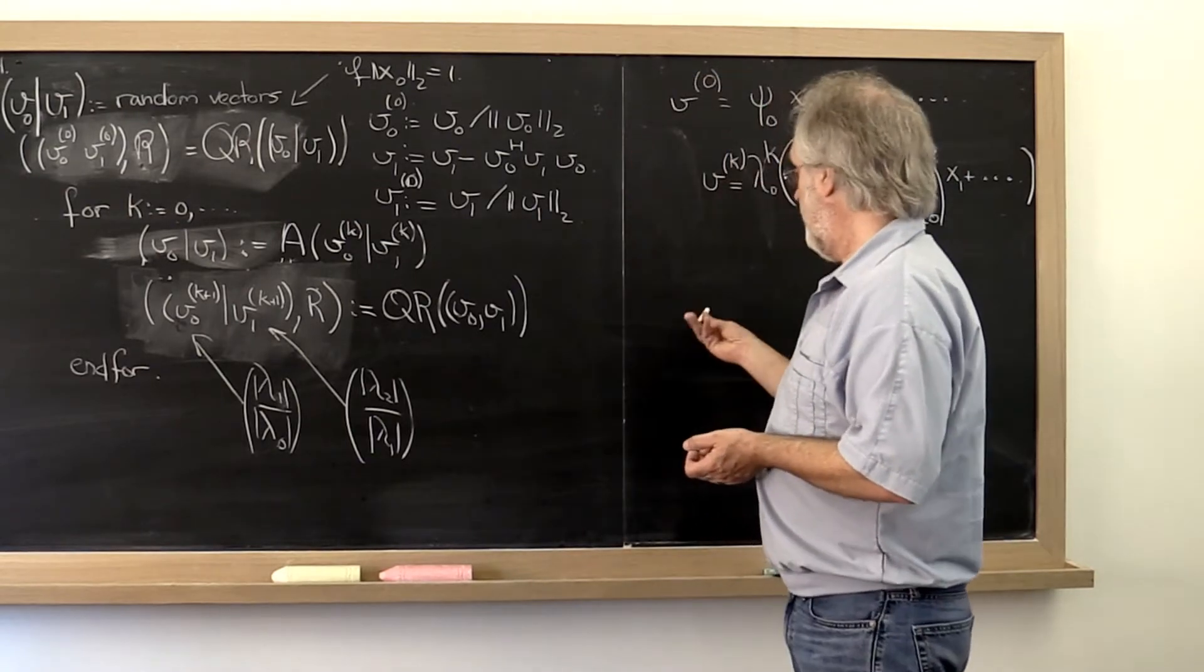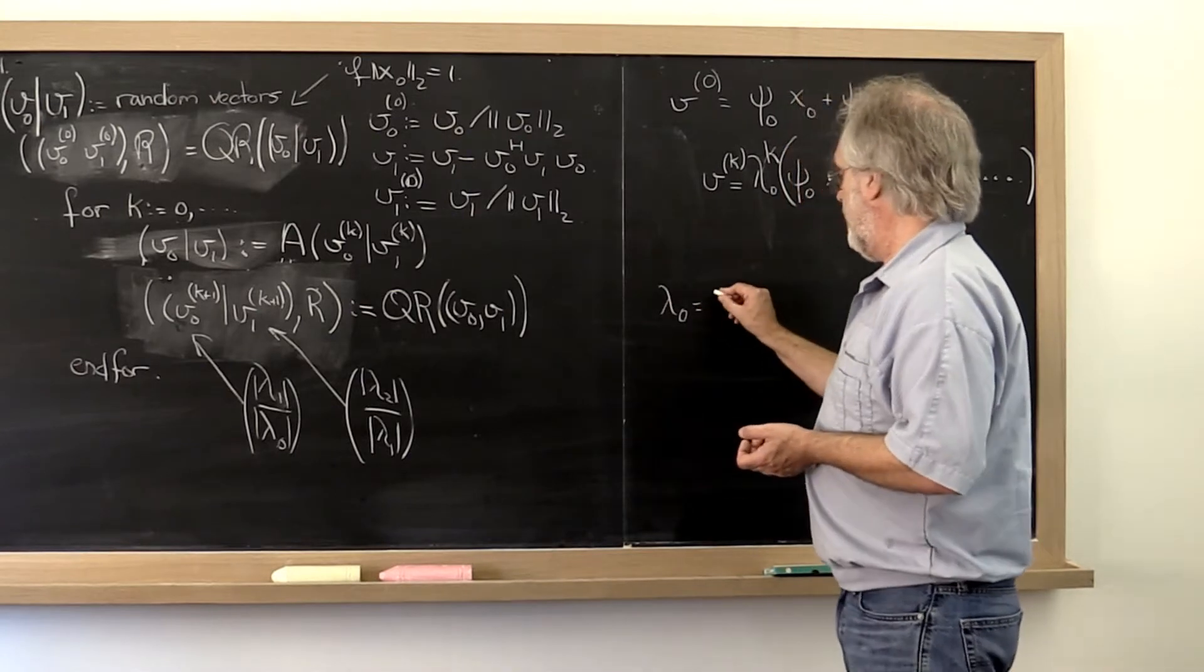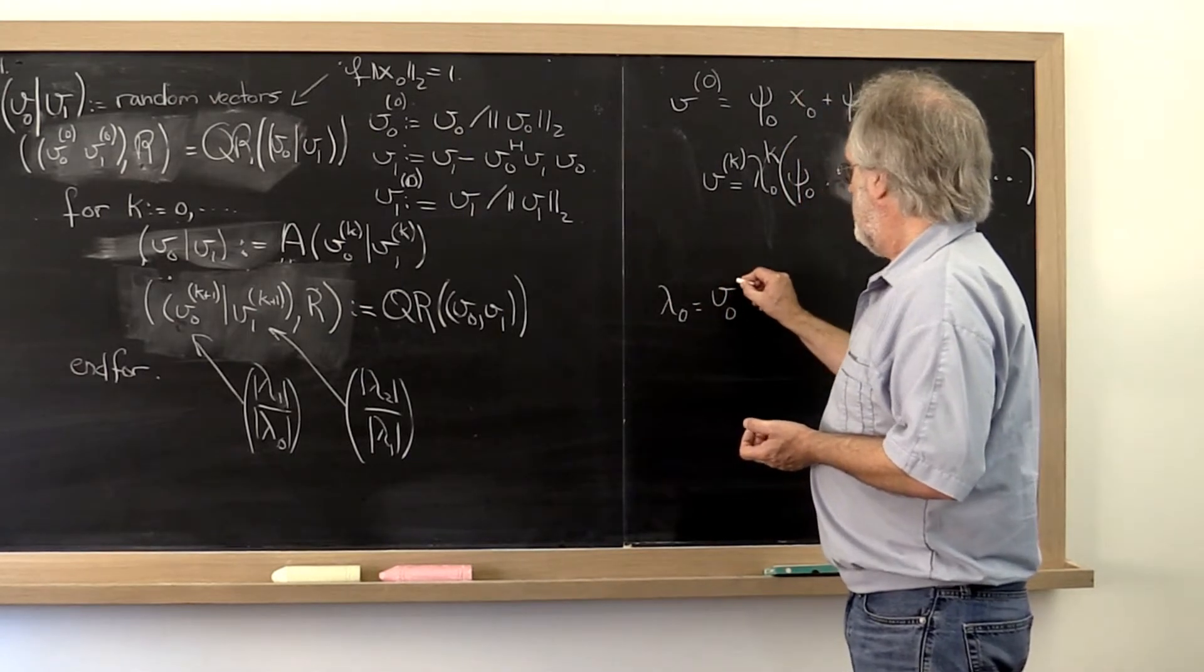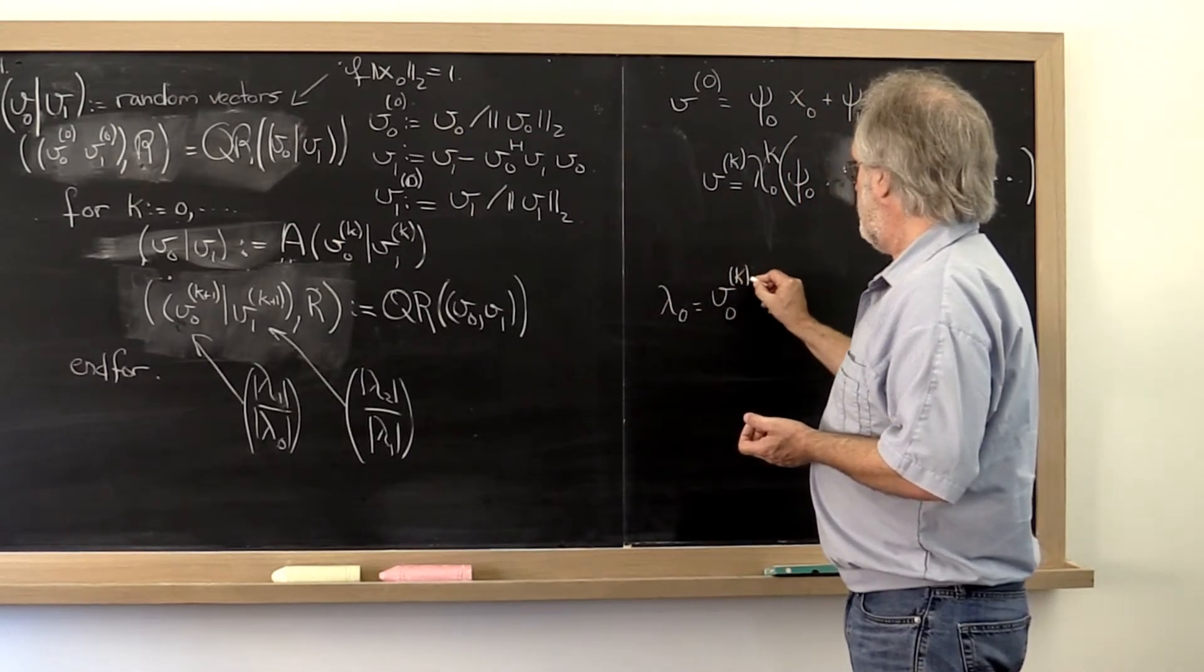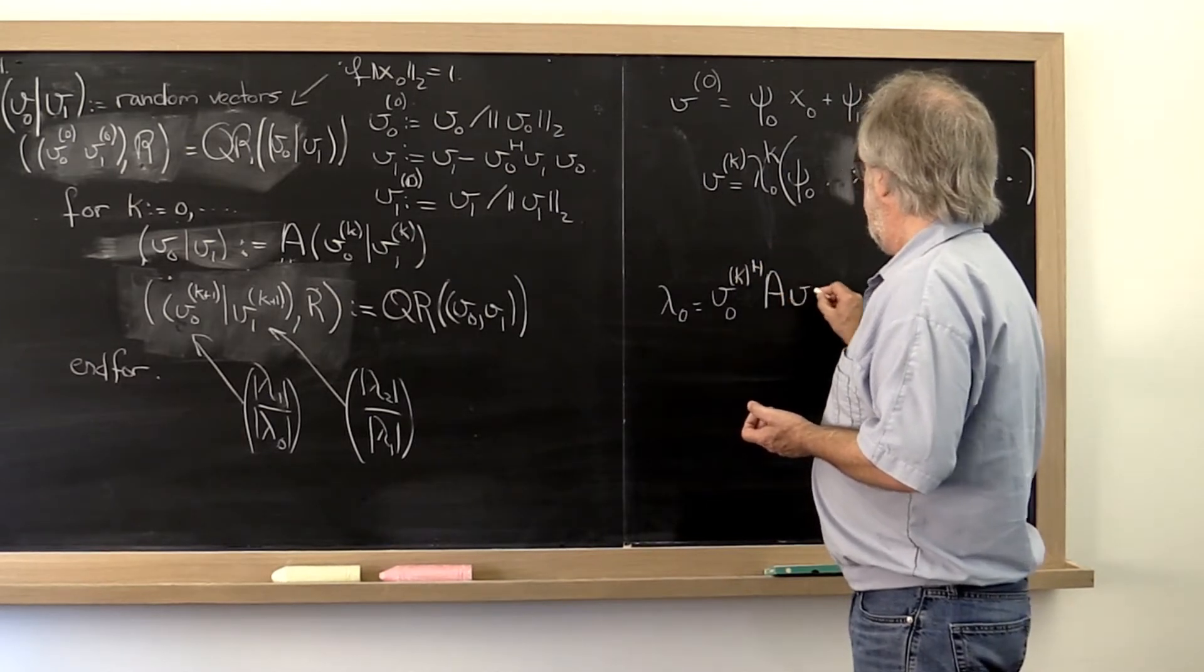Well, we would look at the Rayleigh quotients. Lambda zero would be equal to eventually v zero the kth iteration Hermitian transpose A v zero k.